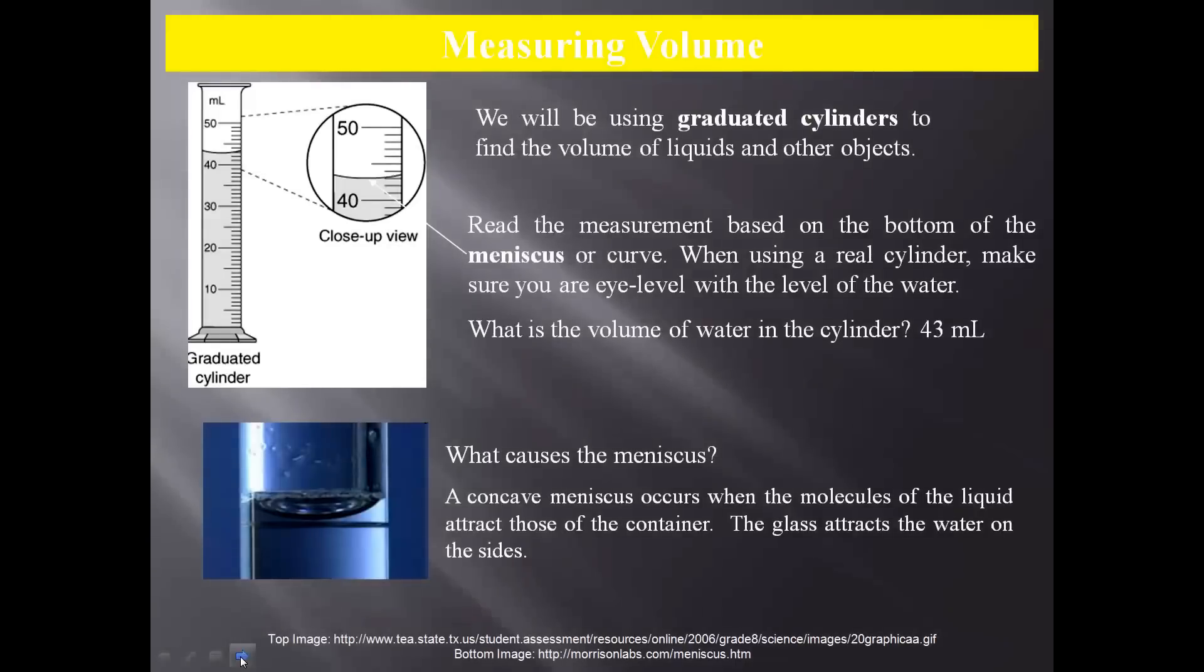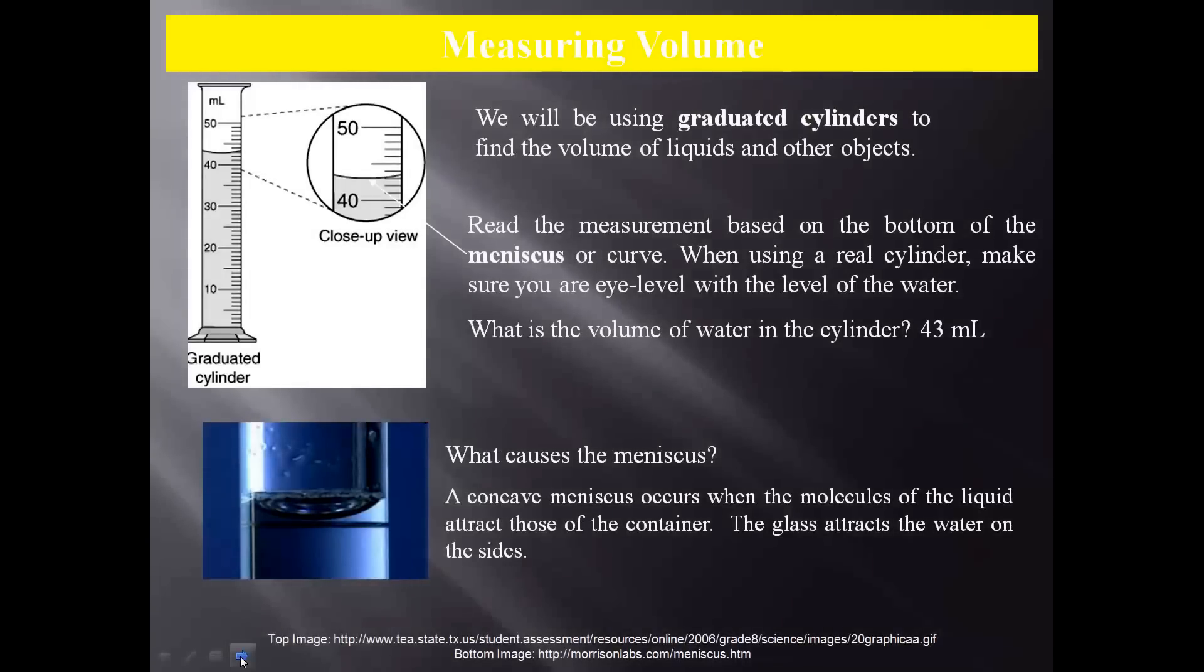When you measure volume, especially liquid, you use what's called a graduated cylinder. You find volume of liquids in other objects. When you have a graduated cylinder, you base your measurement on the bottom of the meniscus, or the curve. If you look at the picture on the left here, you'll see that you have this curve. So when you use a graduated cylinder, you look for the bottom of that curve.